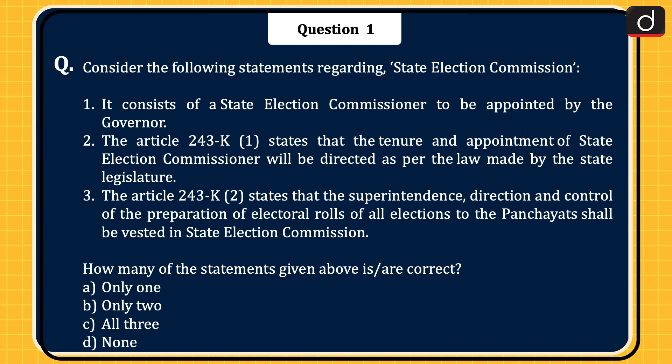Now let's begin today's session. First question: Consider the following statements regarding State Election Commission. 1. It consists of a State Election Commissioner to be appointed by the Governor. 2. Article 243K(1) states that the tenure and appointment of the State Election Commissioner will be directed as per the law made by the State Legislature. 3. Article 243K(2) states that the Superintendence, Direction and Control of the Preparation of Electoral Rolls for all elections to the Panchayats shall be vested in the State Election Commission. How many of the statements given above is/are correct? Only one, only two, all three, or none.